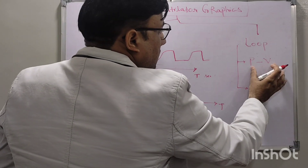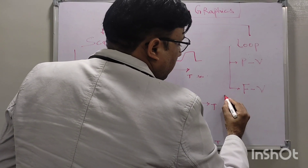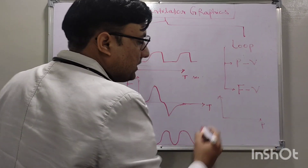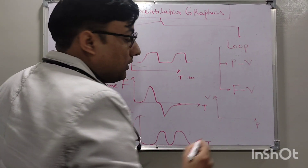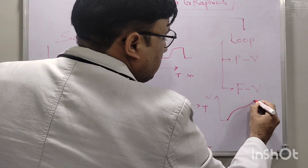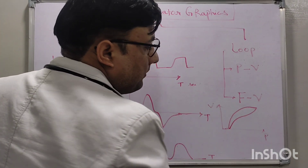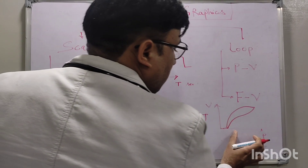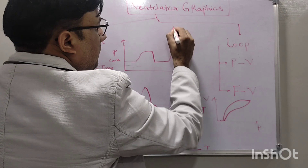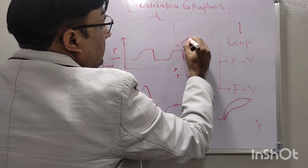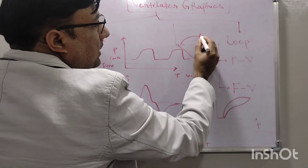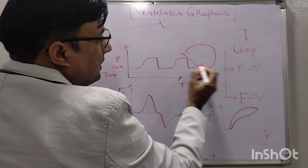Coming to loops — pressure-volume and flow-volume. In the pressure-volume loop, pressure is on the x-axis and volume is on the y-axis. The loop traces inspiration and then expiration. In the flow-volume loop, similarly, it traces inspiration and then expiration.